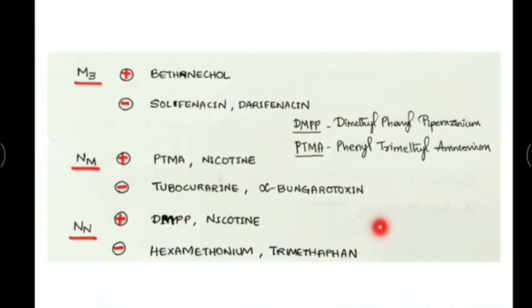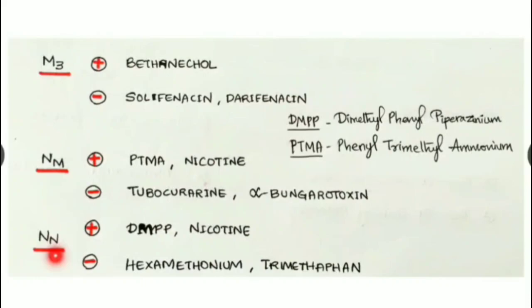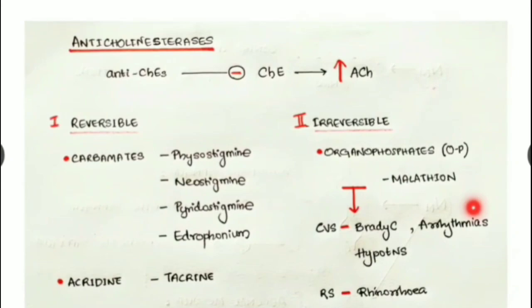For NM receptors, the agonist examples are PTMA (phenyltrimethylammonium) and nicotine. The antagonists are tubocurarine and alpha-bungarotoxin — curare poisoning acts on NM receptors, blocks acetylcholine action, and causes paralysis of skeletal muscles. For NN receptors, the agonist examples are DMPP (dimethylphenylpiperazinium) and nicotine, and the antagonists are hexamethonium and trimethaphan.